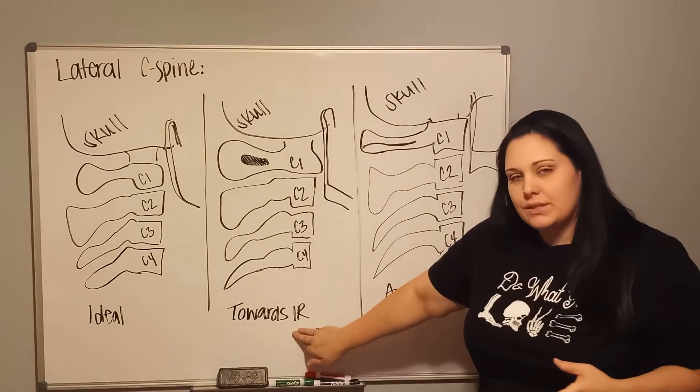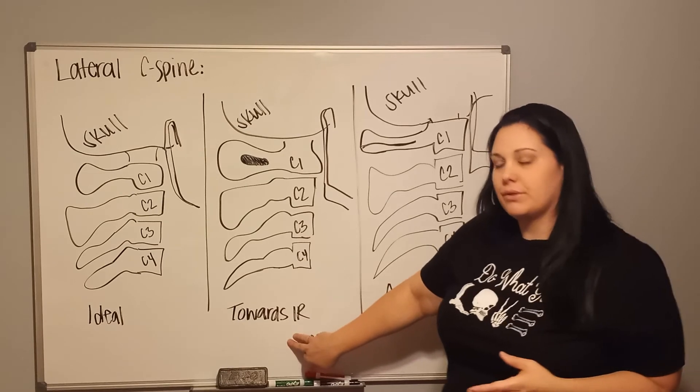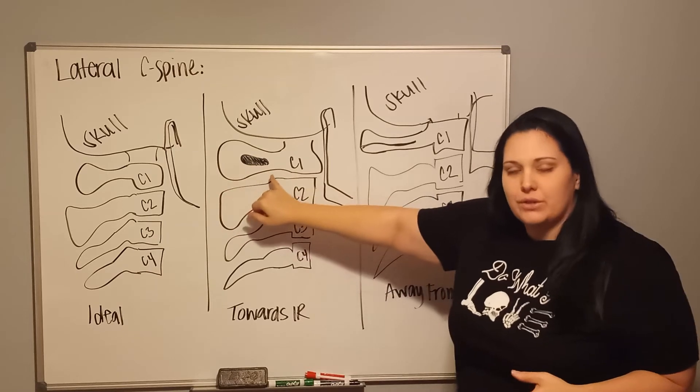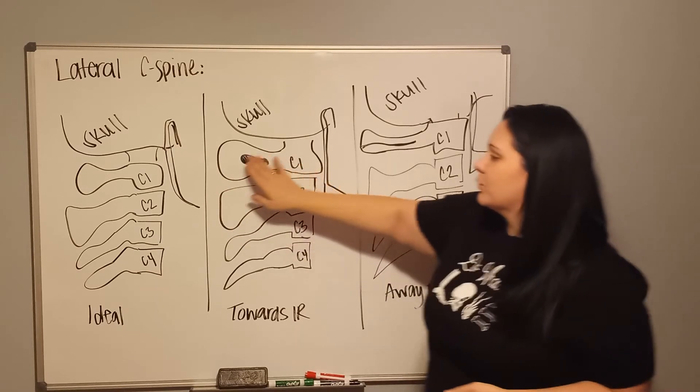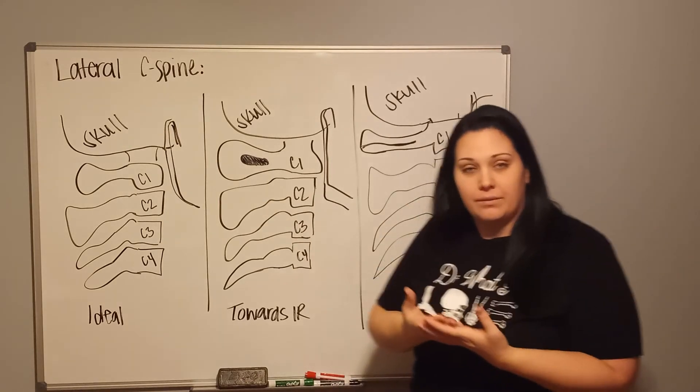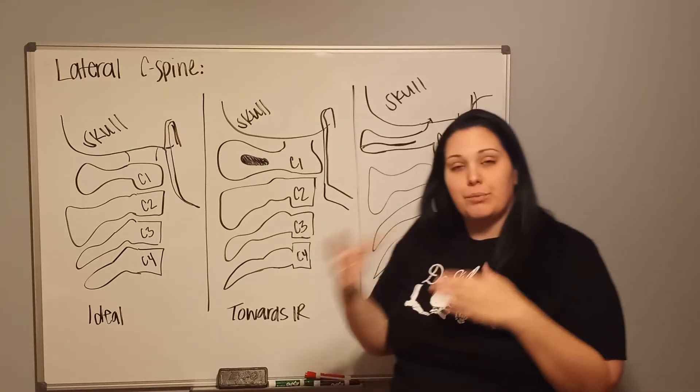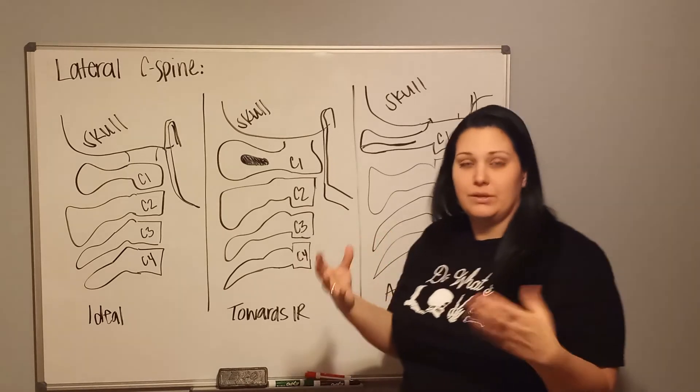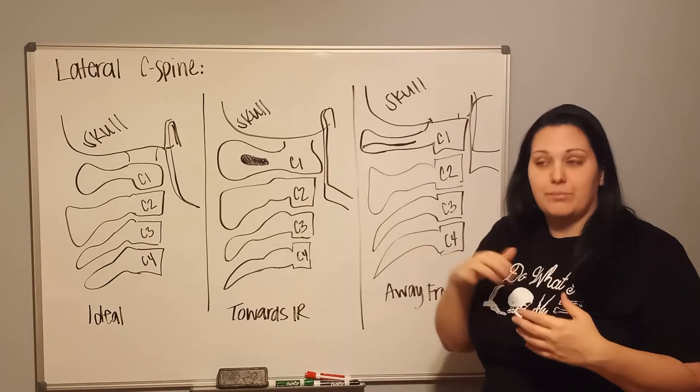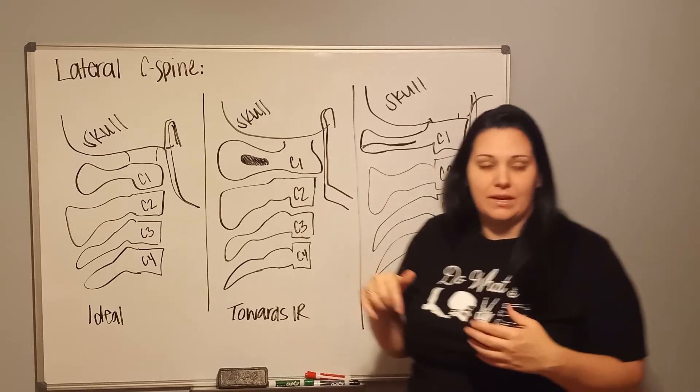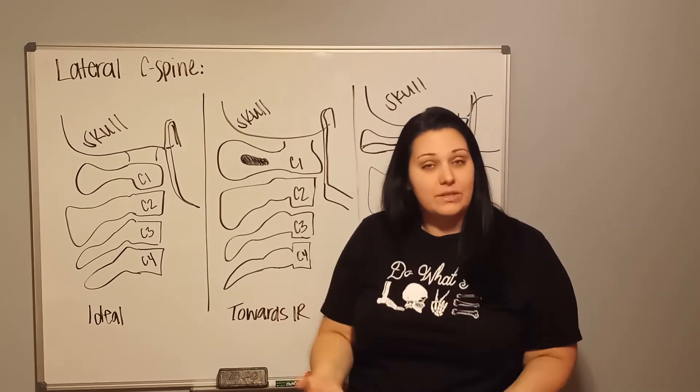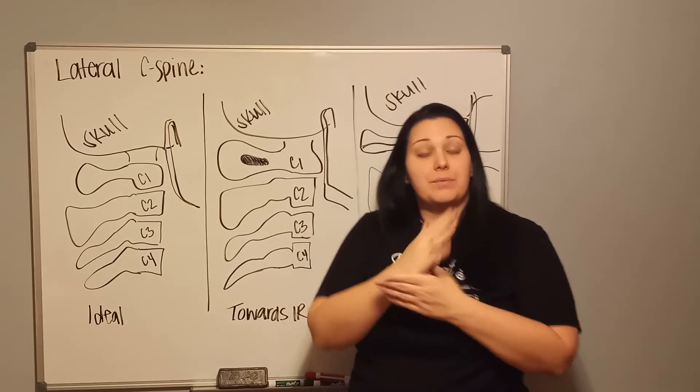When your patient's tilted their head towards the image receptor, you're going to see an opening or a hole in the posterior arch of C1, so it just looks like a black negative space. It's darker than the surrounding area. That's the posterior arch of C1 opening up so that you can actually see the hole, the foramen of that posterior arch. Because remember, it's just a ring, C1. So when they're tilted towards the IR, that ring is going to open up and your CR is going to travel through it.